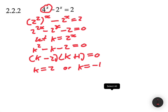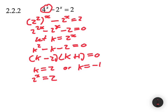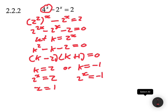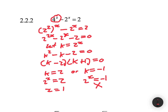But remember k equals 2 to the power x. So if k equals 2, then 2 to the power x equals 2, meaning x equals 1. On the other hand, 2 to the power x equals minus 1 can never happen, so that solution doesn't hold — we cancel it out to show we're fully aware of that.